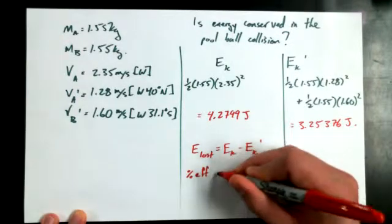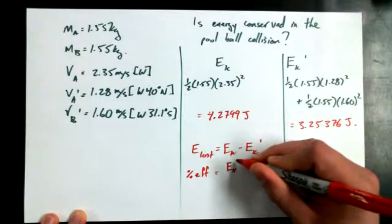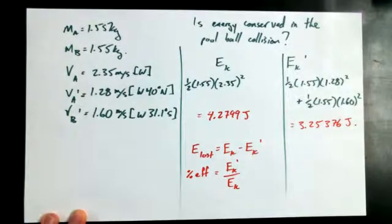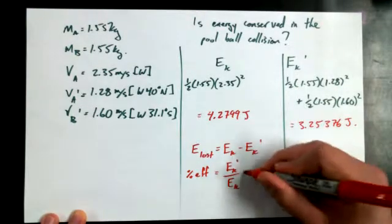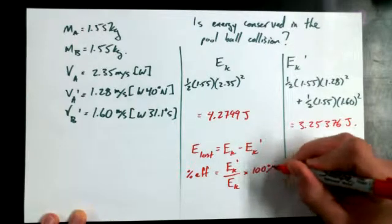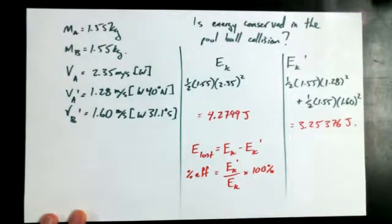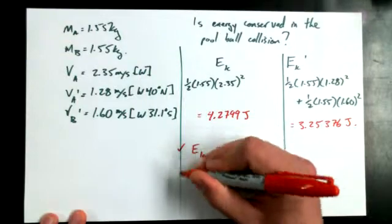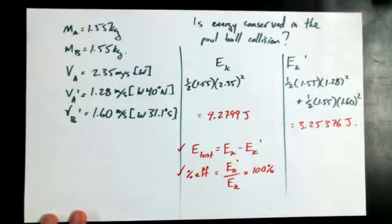Yeah. I could say EK prime divided by EK. So EK final divided by the energy that it started with times 100%. There's a few different ways that I could analyze this. I could talk about how much energy is lost. I could talk about what percentage of energy I still have remaining. But either one, nice valid ways to talk about elasticity. Thank you.